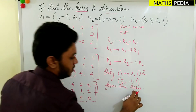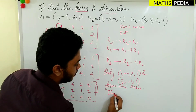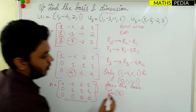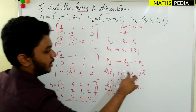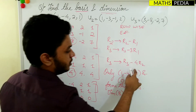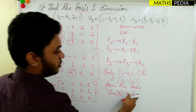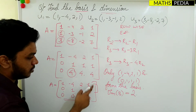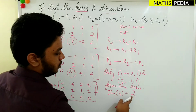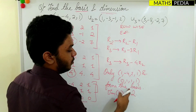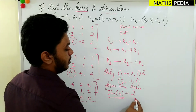The dimension of the given set equals the number of vectors formed for the basis, which is the number of non-zero rows in the echelon form. There are two non-zero rows, so two vectors are formed for the basis. Therefore, the dimension is 2.